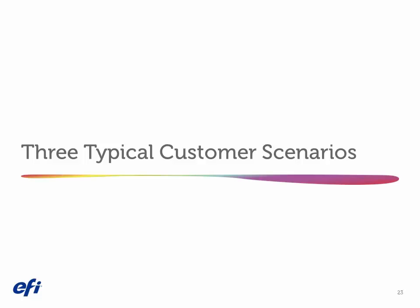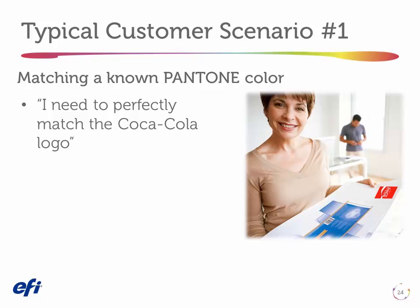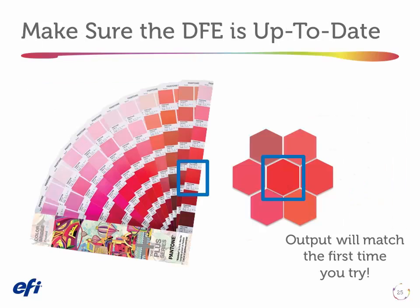Let's look at three typical customer scenarios — challenges of matching spot colors. The first is a professional designer who knows exactly what they need: they need to match the Coke logo, for example. If I have a known spot color to match, the main thing I have to do is make sure the spot color library is up to date on my DFE. Pantone is always improving their system — there's Plus V2 recently, Pantone Plus before that, and the 336 New in the middle. Always make sure you have the latest library loaded. Provided you do, and you've calibrated and made a custom output profile for your actual press, paper, and print settings, you should have an excellent match on the first try.